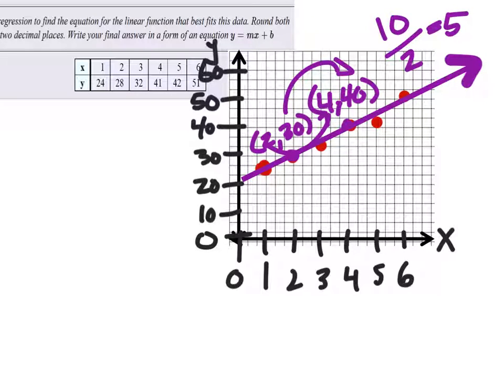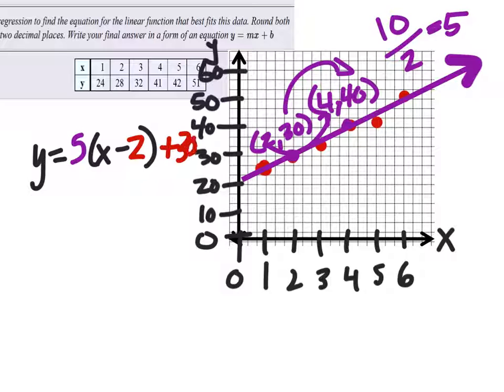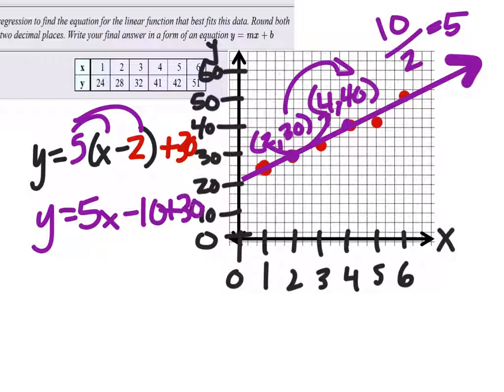So I can use point slope form. Y equals my slope, 5. And I've got X minus... Which of the two points do you guys want to use? 2 or 30. 2, 30. So my X is 2. And my Y is a positive 30. And distributing the 5, we've got Y equals 5X minus 10 plus 30. So Y equals 5X plus 20.